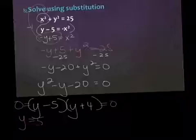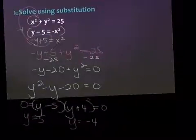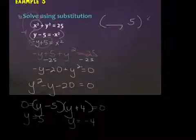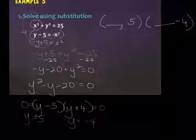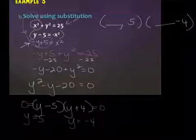Y equals five and y equals negative four. Now I've got the two y values. So if I'm building a solution set, I already have negative five and negative four. Now I want to find the x values that go with those. I could plug it into either equation — I could plug in here or here.